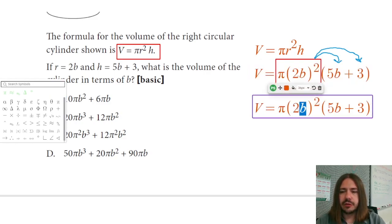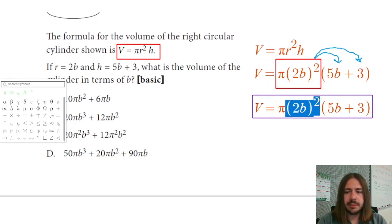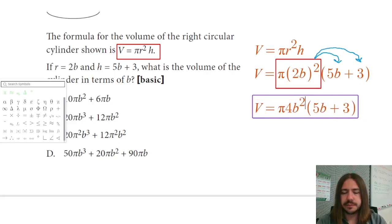So 2b squared would be 2b times 2b. 2 squared is 4, and b squared is just b squared. Now, usually you'll write the pi after the integer coefficient here, so I'm going to move this pi over. I'm allowed to do that because multiplication is commutative, and the order doesn't matter. a times b is the same as b times a.